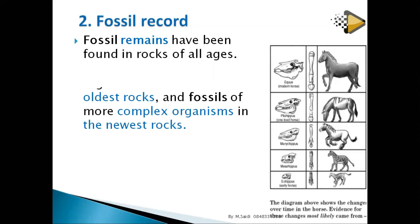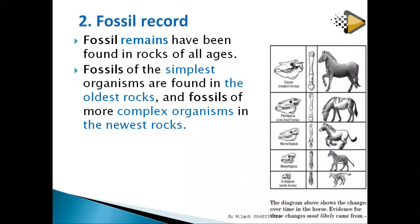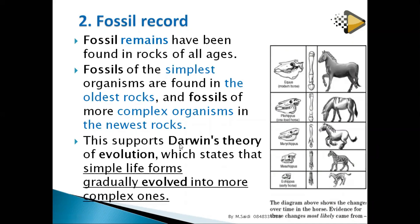Fossils of the simplest organisms are found in the oldest rocks, while fossils of more complex organisms are found in the newest rocks. This supports Darwin's theory of evolution, which states that simple life forms gradually evolve into more complex ones.